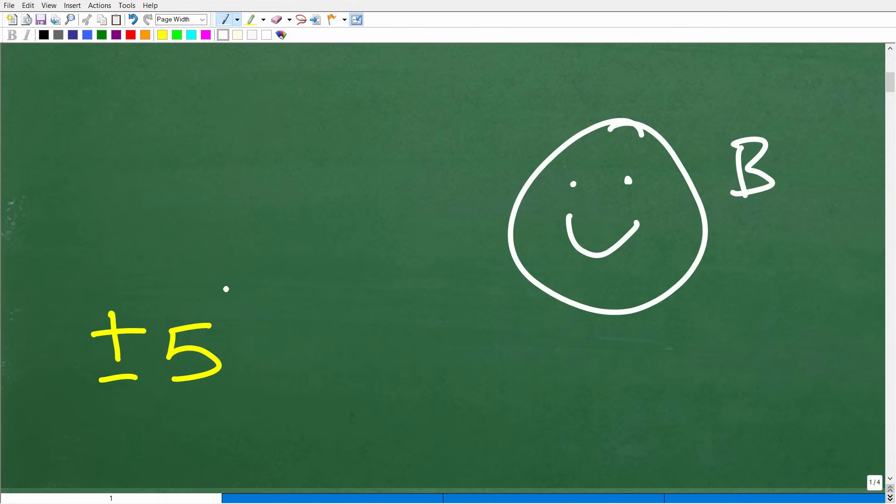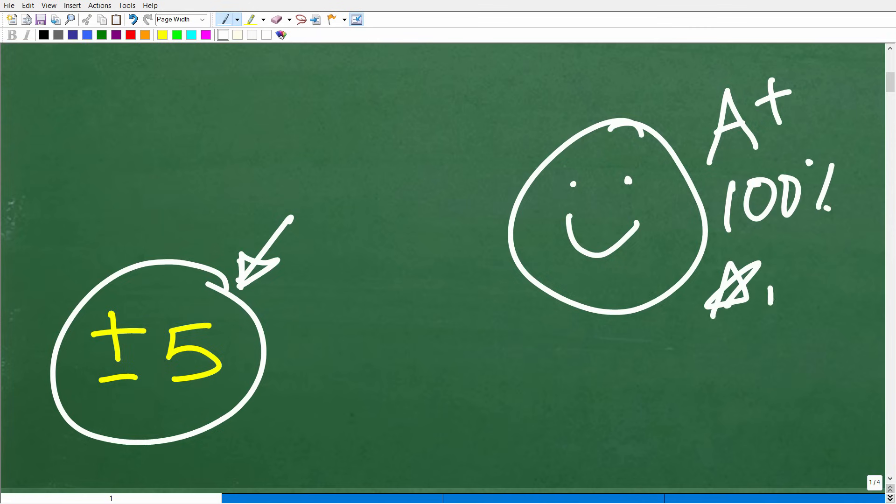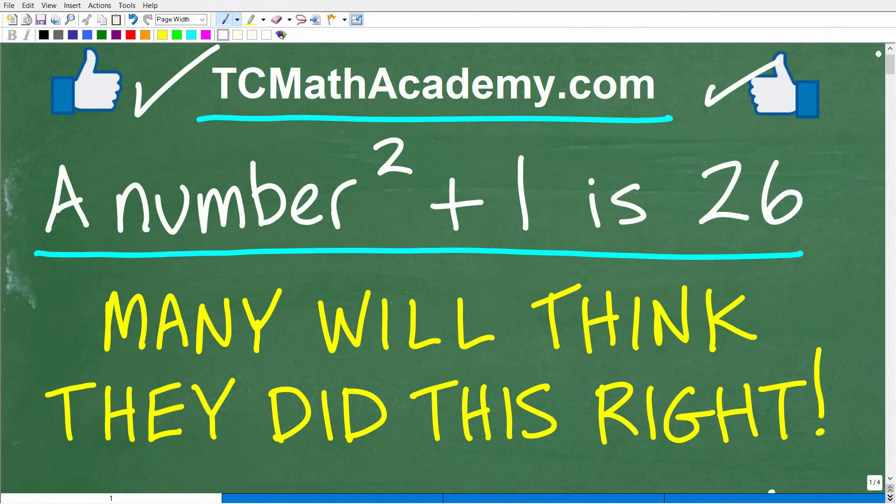The technically correct, absolute right answer is positive and negative 5, and there is a good reason why it's both positive and negative 5, because both of these numbers are the solution, not just one. If you got positive and negative 5, you certainly earned an A plus, 100%, and multiple stars.